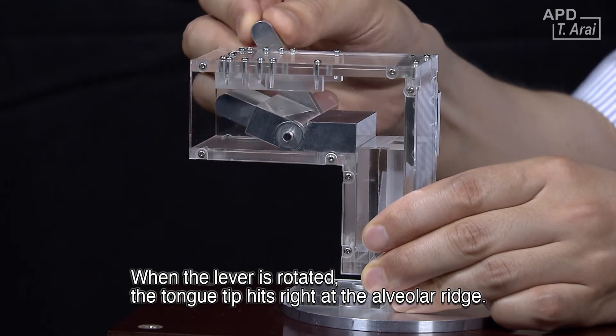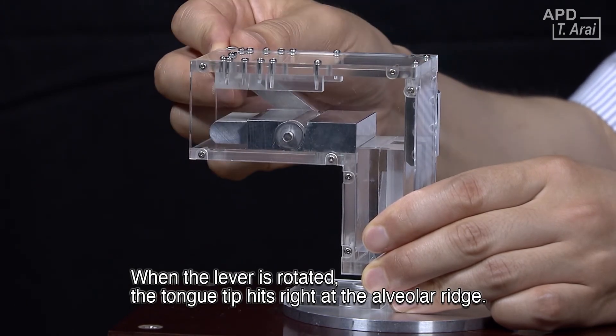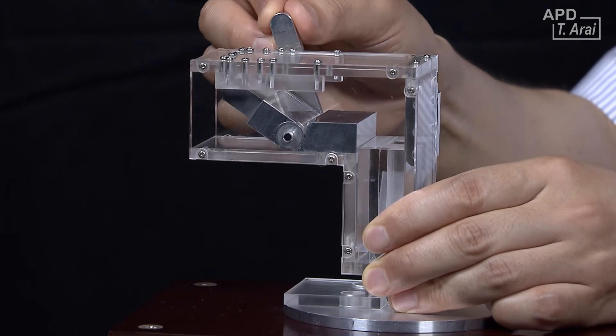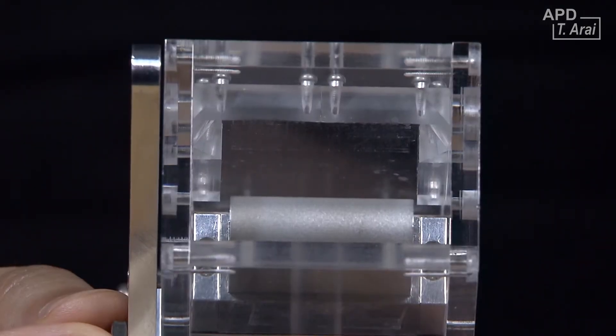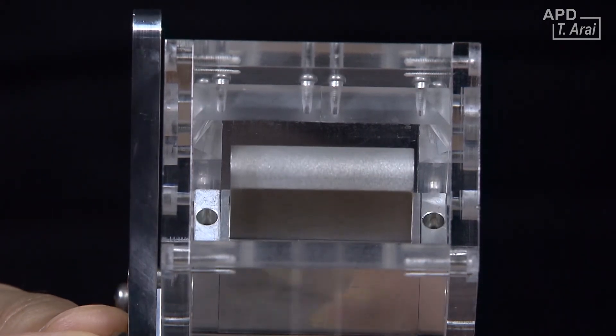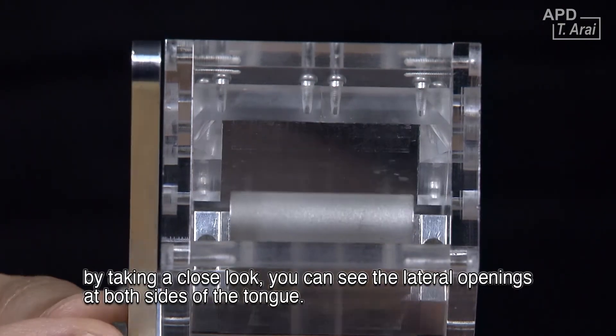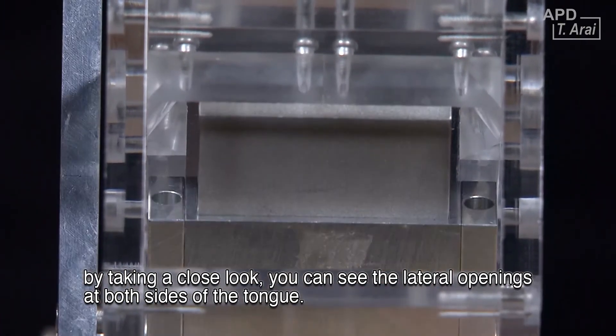When the lever is rotated, the tongue tip hits right at the alveolar ridge. Although the tongue tip touches at the alveolar ridge, by taking a close look, you can see the lateral openings at both sides of the tongue.